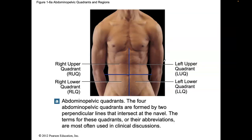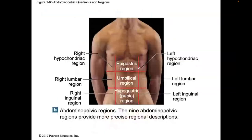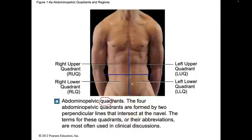We're going to learn this two ways. We're going to learn it as quadrants — quad means four — and then we will refer to regions, which are nine regions. So let's take a look at the quadrants first.